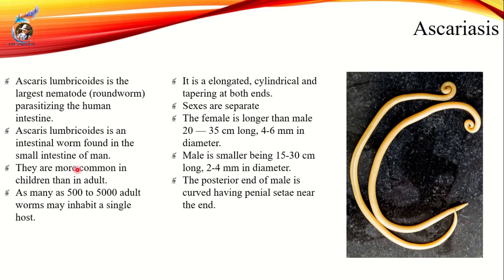It is very serious. If you see these symptoms, one human being may have 500 to 5000 adult worms. It is a very severe case. Here we will discuss the morphology of Ascaris lumbricoides.